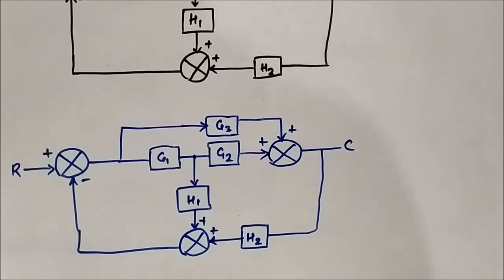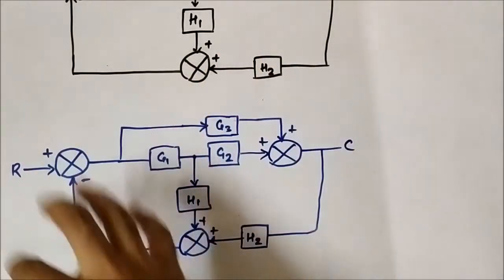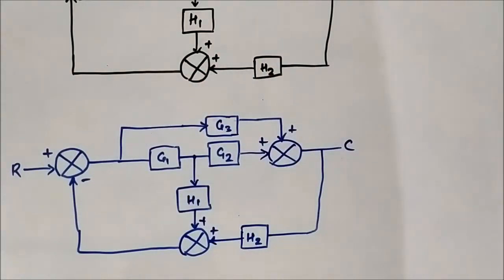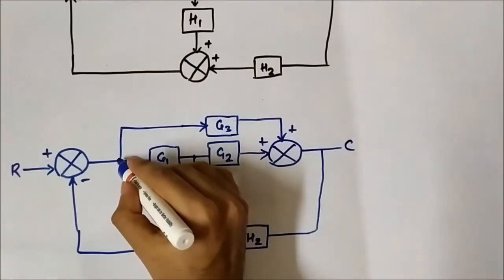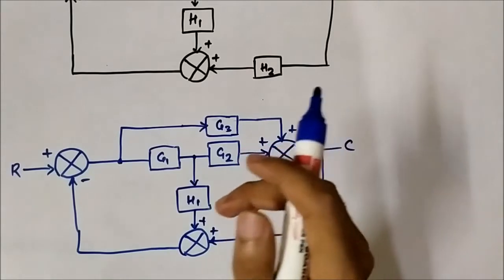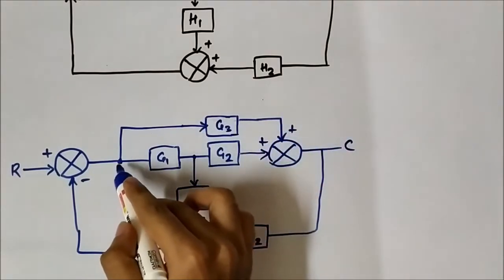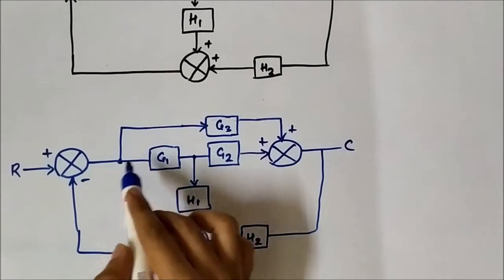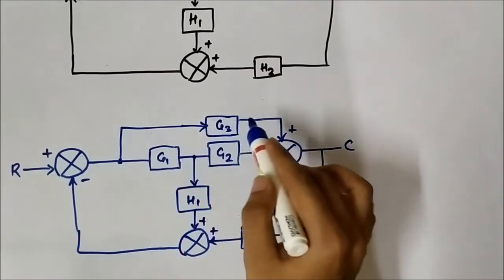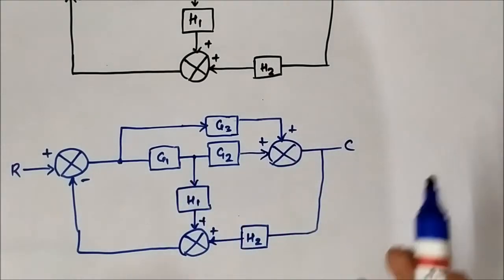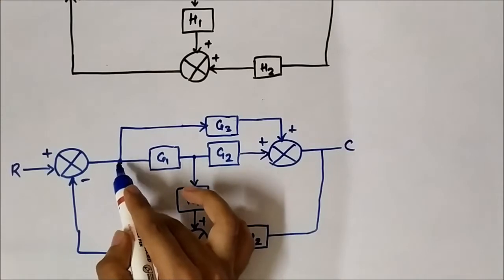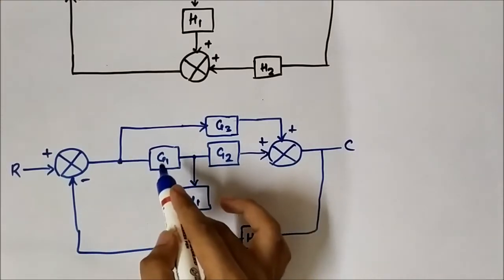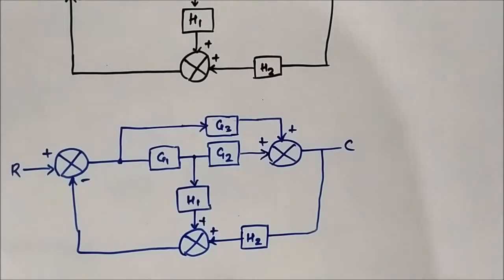As usual we will try to pick a spot where we can apply the block diagram reduction rule. If we see this takeoff point here, if we shift it here, then there are a lot of things we can do so that it gets simplified. We will be shifting this takeoff point ahead of this block G1.